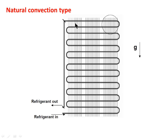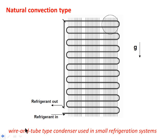First, the natural convection type condenser. This is the diagram for the wire-and-tube type condenser, which is generally used in small refrigeration systems. Here we can see the refrigerant inlet and refrigerant outlet. The wires are nothing but fins provided over these tubes. These types of condensers are generally used in domestic refrigerators. There is no other medium of heat extraction, so this is an air-cooled condenser only.